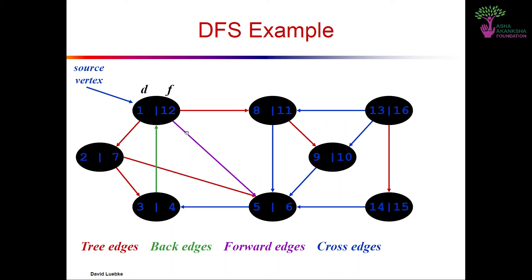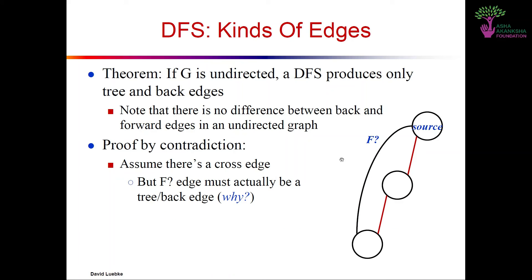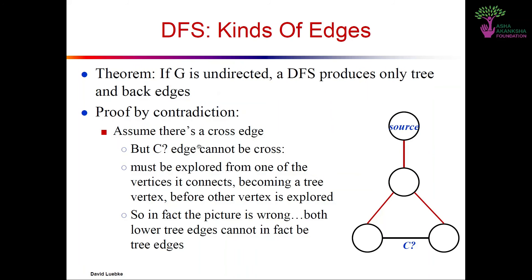Then comes the forward edge — from an ancestor to a descendant, but not a tree edge. This is from a gray node to a black node. In the example, we went from node 1 to 2 to 3, back to 2, then 2 to another vertex, and eventually encountered a node that was already black — shown by the purple arrow. Checking gray to black gives a forward edge. To summarize: tree edge is gray to white, back edge is gray to gray, and forward edge is gray to black.